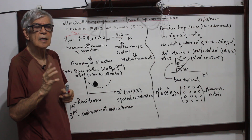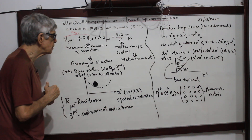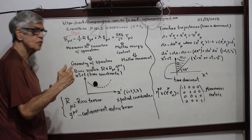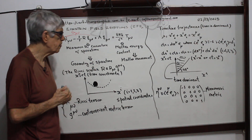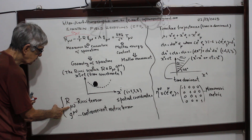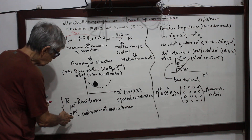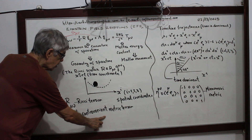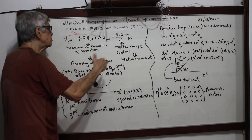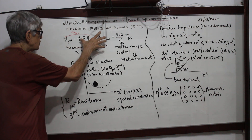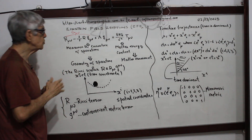Remember that a scalar is a zero-order tensor — that's very important. A scalar is also a tensor, but of order zero. This R-mu-nu is a second-order component, called the Ricci tensor. G-mu-nu contravariant is the contravariant metric tensor; G-mu-nu covariant is the covariant metric tensor, as I emphasized in the last two videos.